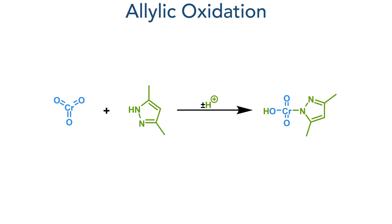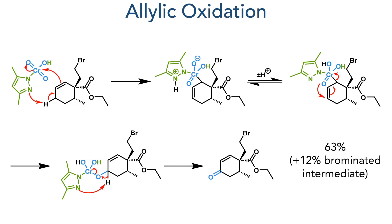This compound was not isolated; instead a solution of chromium trioxide and dimethylpyrazole was added to the reaction mixture. The chromium complex that is formed is attacked by the alkene while the pyrazole ligand acts as a base to deprotonate the allylic position. One of the oxygens bound to the chromium then attacks this position forming a carbon-oxygen bond while the carbon-chromium bond is broken. The pyrazole once again acts as a base, eliminating chromium to produce the target enone in a 63% yield, with a 12% yield of the brominated intermediate also recovered.